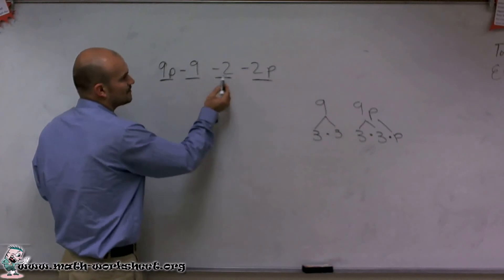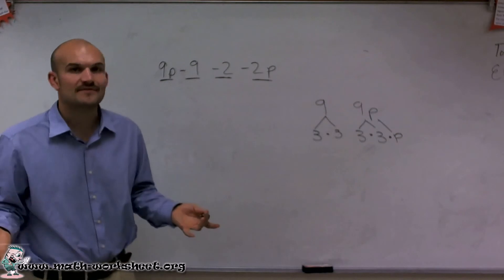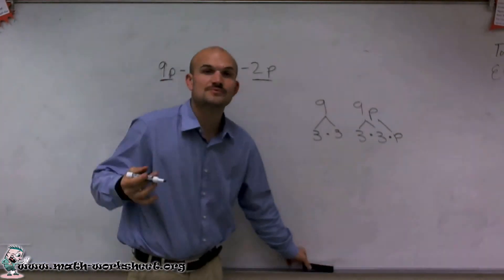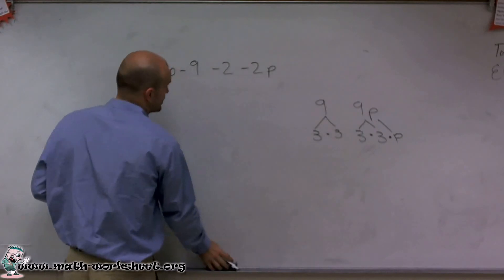You can't say 9p minus 2 would be 7p. Since they're not like terms, we can't combine them. So what we can only do is combine terms that are similar.